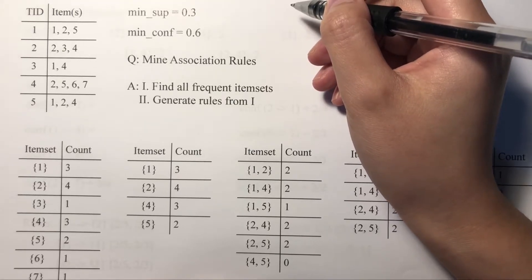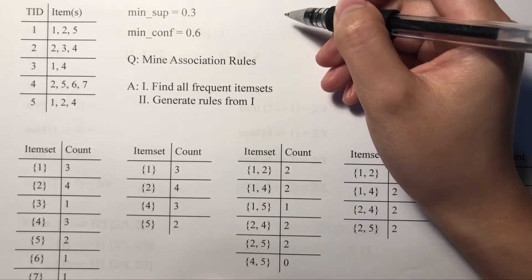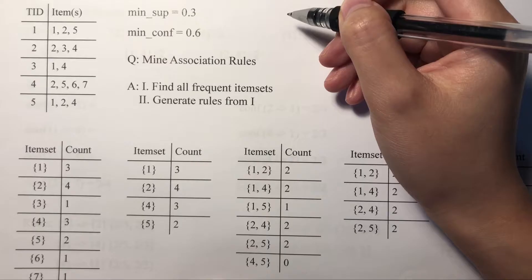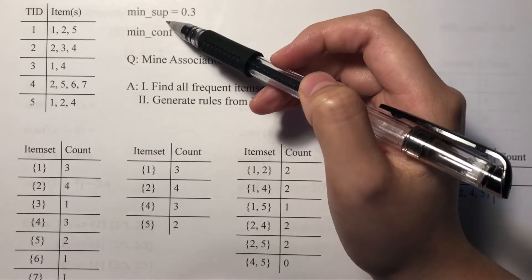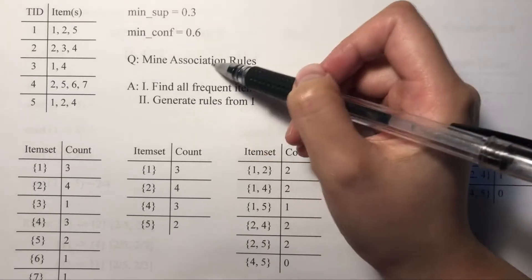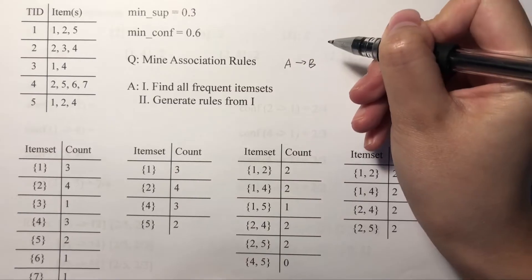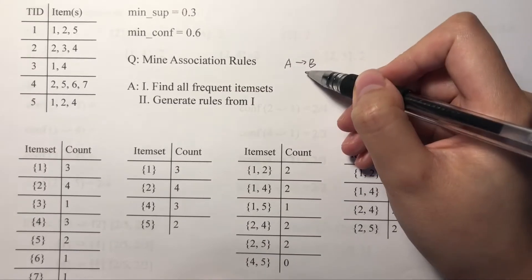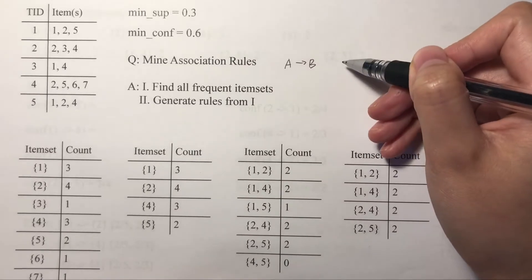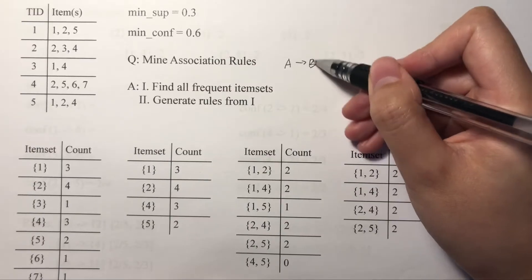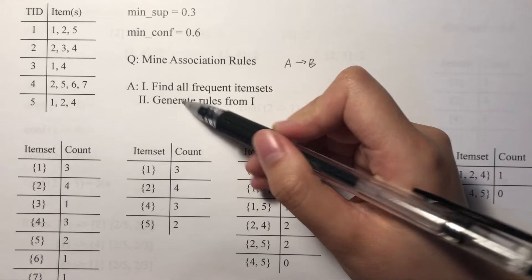Today I'm going to talk about the Apriori algorithm with an example, and also how to generate candidates with the join step and prune step, because some people find it a little bit tricky. This is a typical question for the Apriori algorithm — we're given a dataset, minimum support, and minimum confidence, and we want to mine association rules.